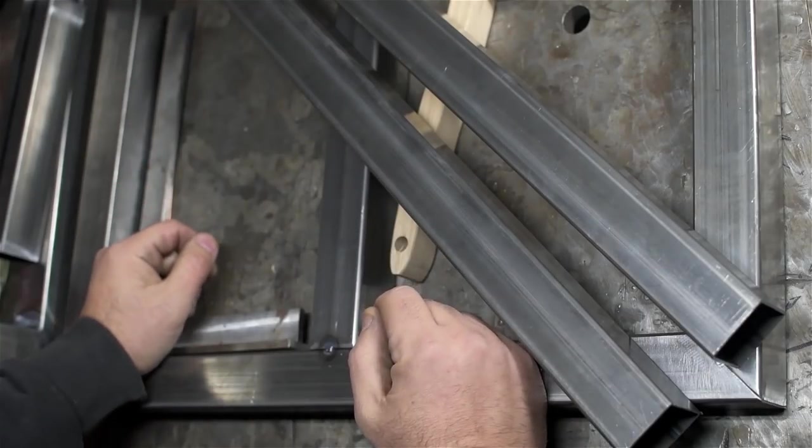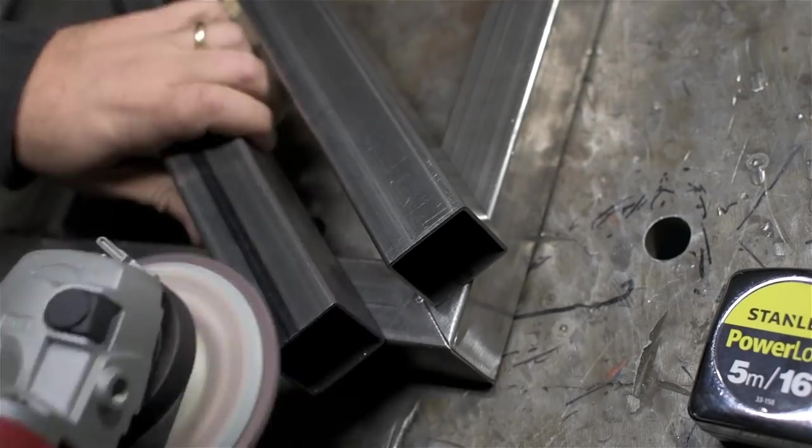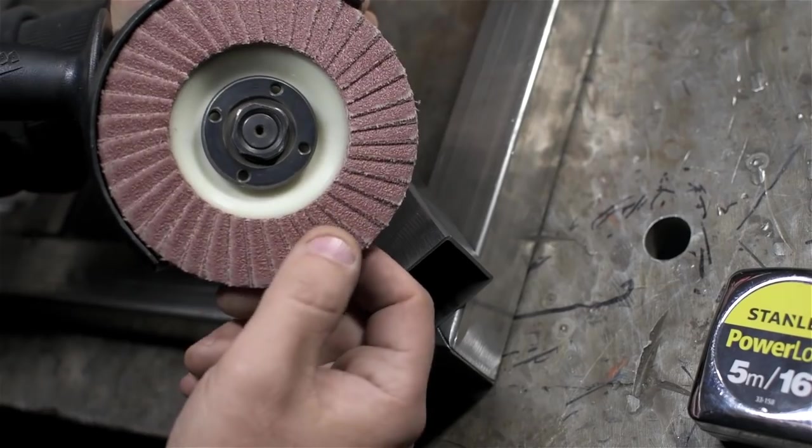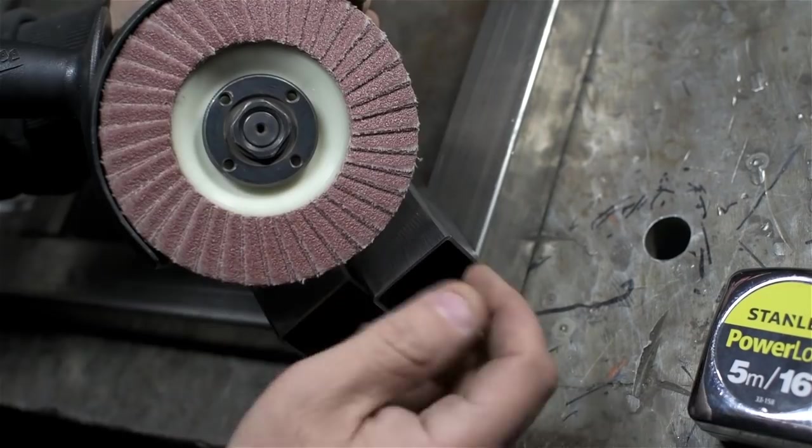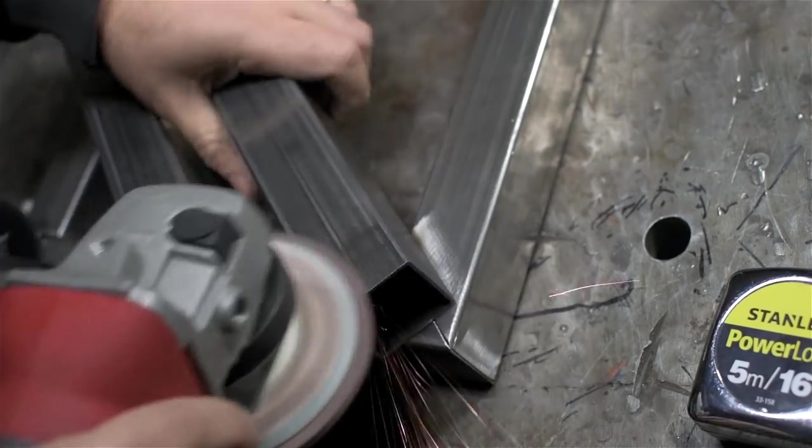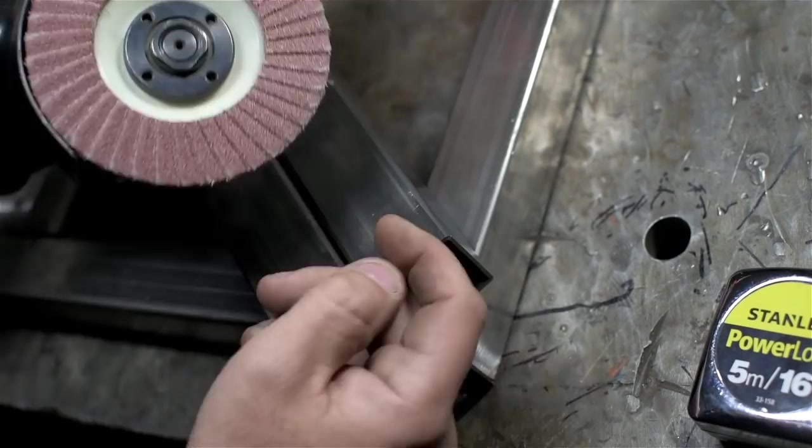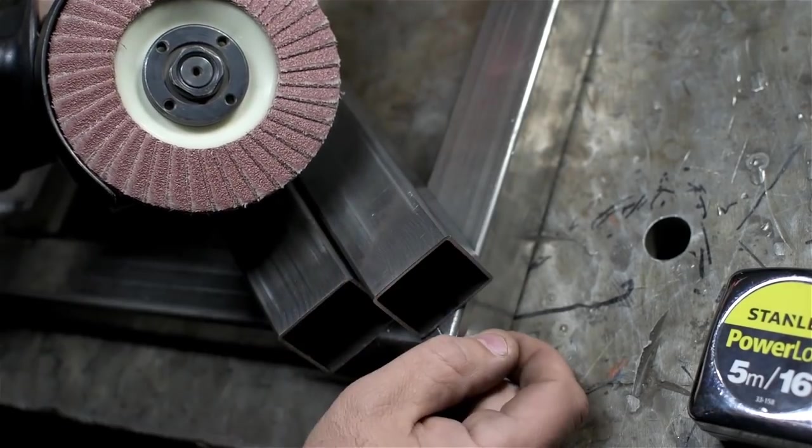Next I'm going to put on the uprights. I'm deburring and sort of cleaning a bit with a flap wheel. I don't know, 60 or 80 grit, maybe 80. And then just sort of wiping the joint down before I weld it.